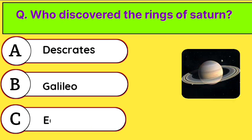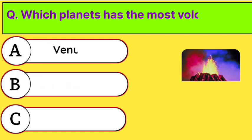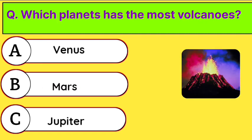Who discovered the rings of Saturn? Correct answer is option B. Galileo. Which planet has the most volcanoes? Correct answer is option A. Venus.